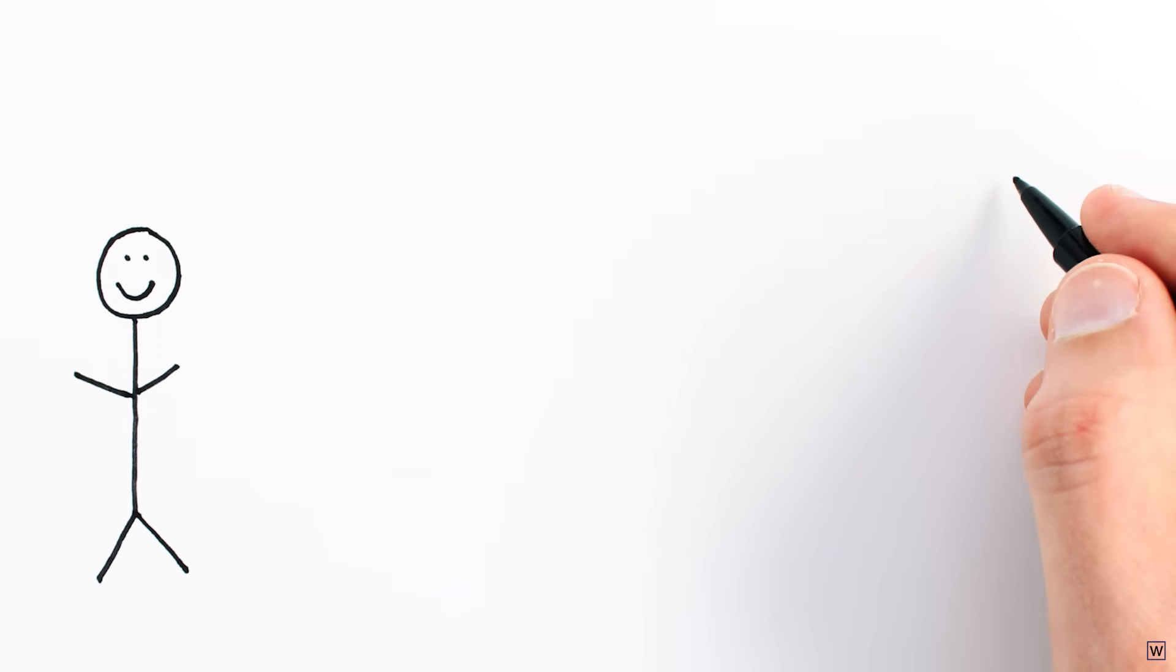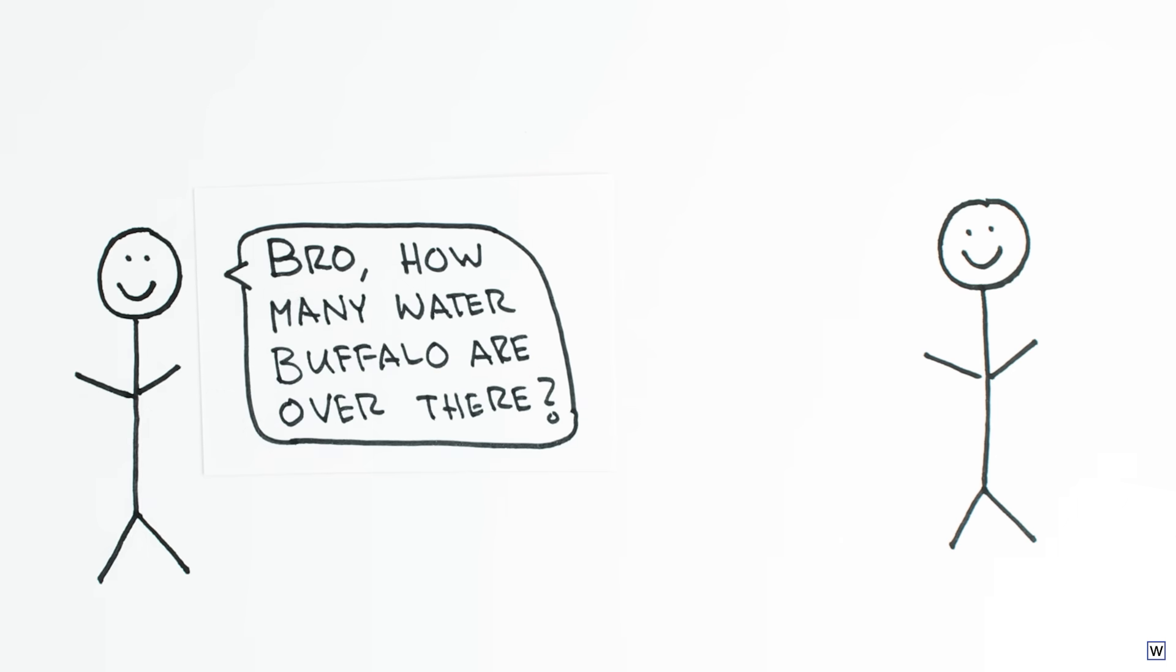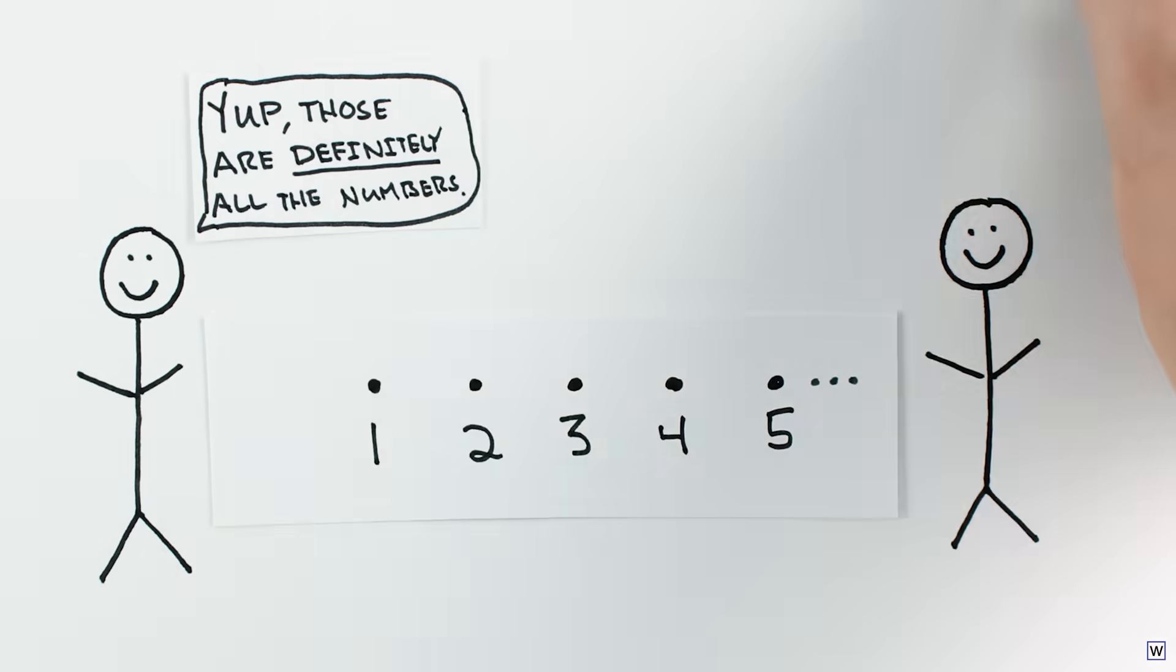Early humans really only had use for the natural numbers, that is 1, 2, 3, and so on. This makes sense because of how numbers were used. So to early humans the number line would have just been a series of dots.